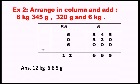Now look at the second example: arrange in column and add 6 kg 345 gram, 320 gram, and 6 kg. Two different units are involved, so make two columns for kg and gram. For 6 kg 345 gram, place 6 under kg and 345 under gram. For 320 gram, write 0 under kg and 320 under gram. For 6 kg, write 6 under kg with no gram. After adding, the answer is 12 kg 665.